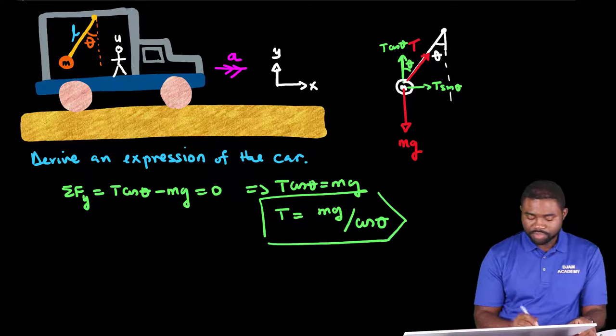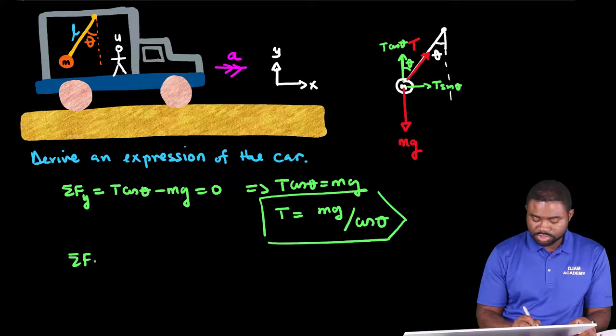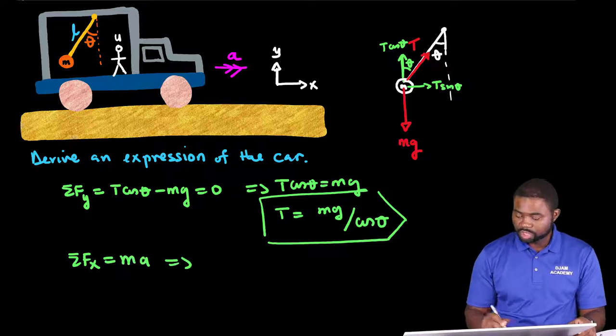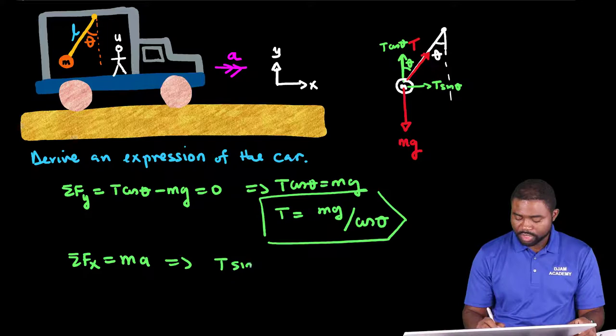Now on the other hand, the sum of forces along the x direction is equal to ma. This means that T sine theta is equal to ma.